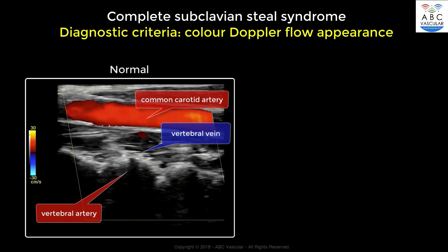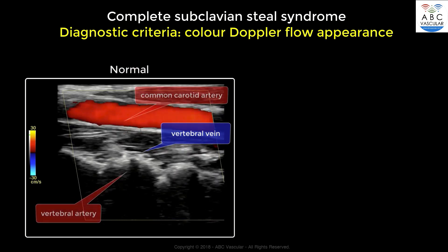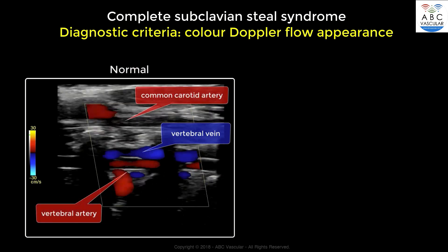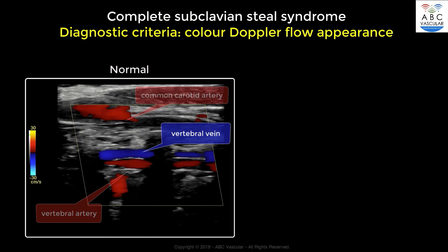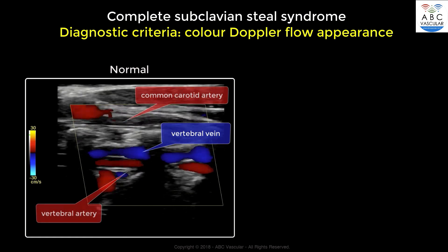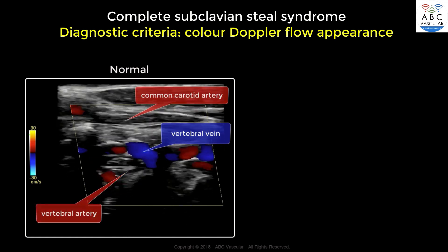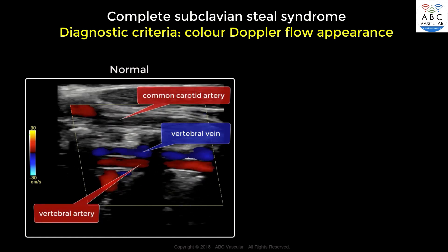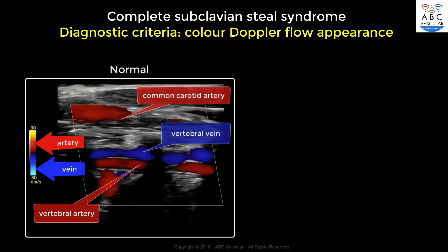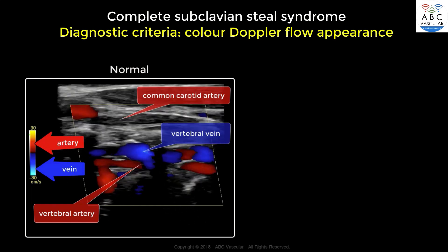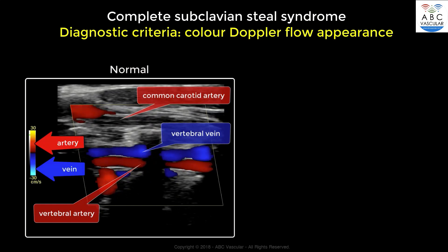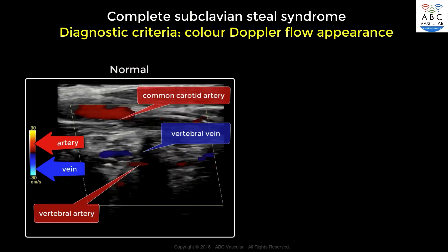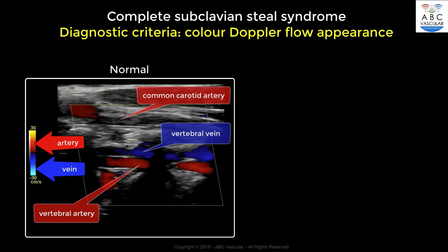In the absence of pathologies, the common carotid artery and the ipsilateral vertebral artery present with the same color Doppler flow appearance. Thus, if red on the color bar indicates arterial flow, both the common carotid artery and the vertebral artery will appear in red, while the vertebral vein will appear in blue.